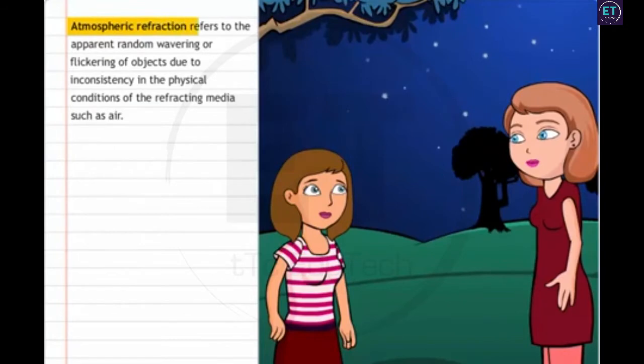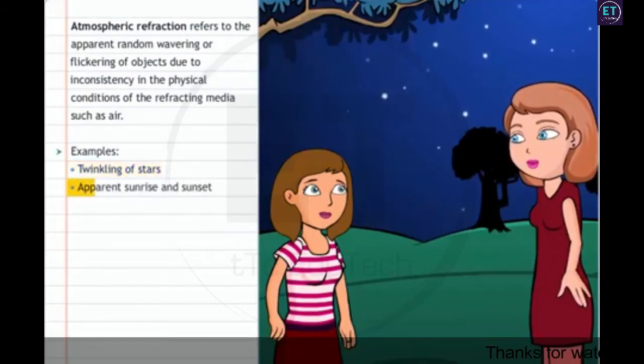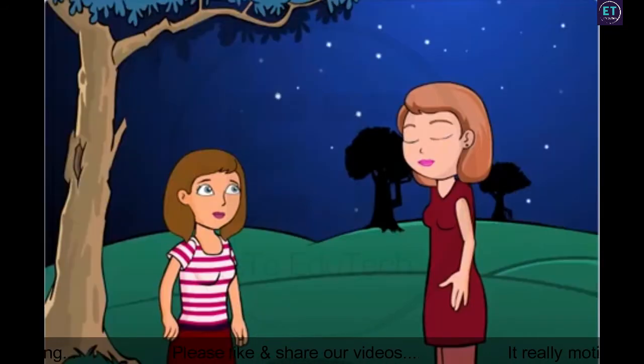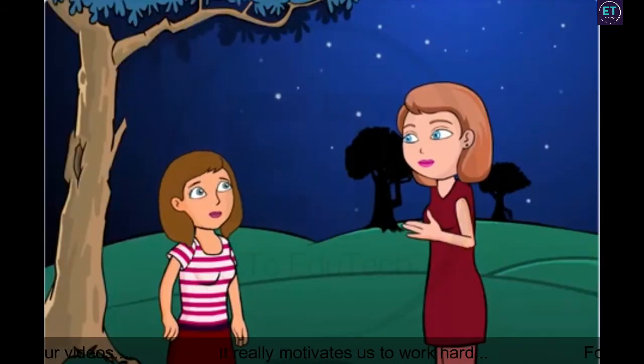Atmospheric refraction refers to the apparent random wavering or flickering of objects due to inconsistency in the physical conditions of the refracting media, such as air. In fact, atmospheric refraction can explain twinkling of stars as well as apparent sunrise and sunset. Let's first look at the twinkling of stars.